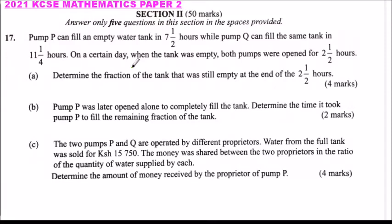This is Section 2, which is 50 marks. It consists of 8 questions. You are supposed to answer 5 out of the 8. Each question is 10 marks, so 5 questions will equal 50 marks.